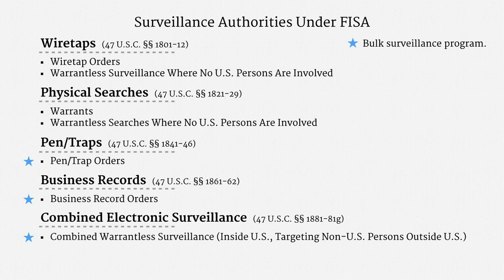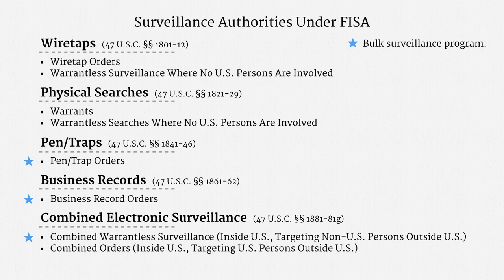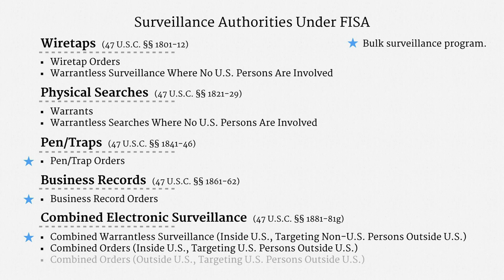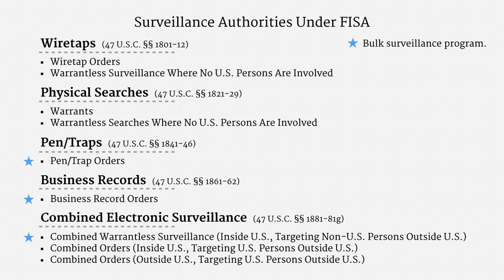Another section in this part of FISA sets out a combined court order for targeting a U.S. person who's overseas but still has some data in the country. The last section is similar, except it applies to surveillance outside the country. That provision of FISA is very unique — it's the only part of the statutory scheme that regulates government conduct outside the United States.